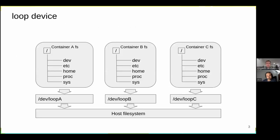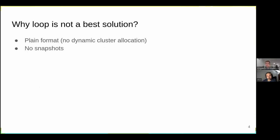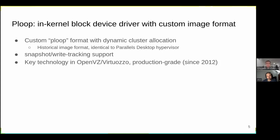Consider the following picture: we have three containers with some trees in those containers, and three loop devices as the backing storage. This picture is great, but the problem is that the loop device uses a plain image format, which causes issues — it has no dynamic cluster allocation mechanism, so we waste a lot of space, and it doesn't provide the ability to make snapshots.